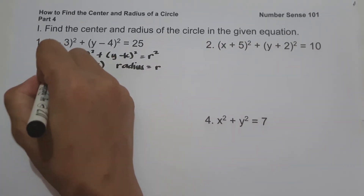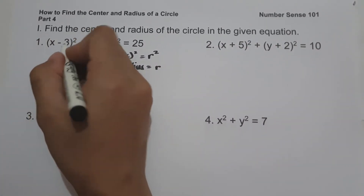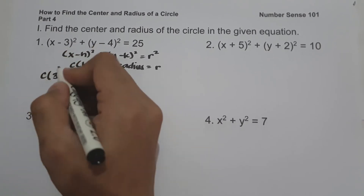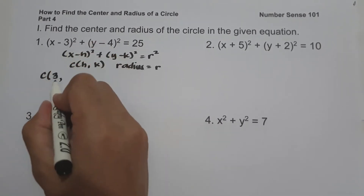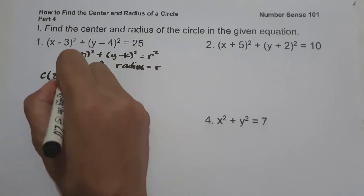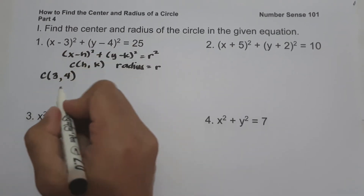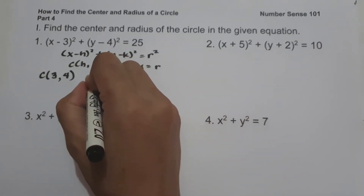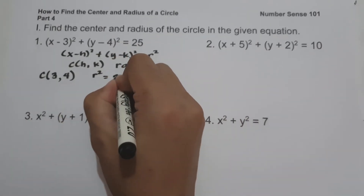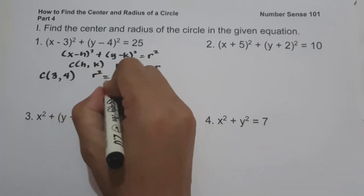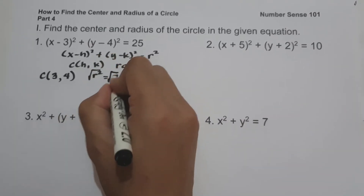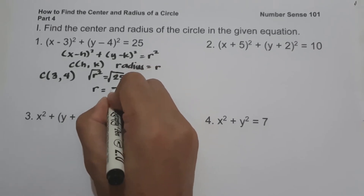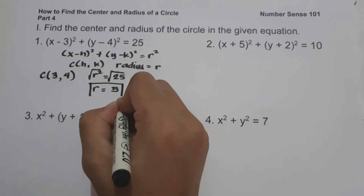To find the center, we have negative 3, so we write it as positive 3 — we take the opposite sign — and the y-value is 4. So our center is (3, 4). To find the radius, r squared equals 25. Taking the square root of both sides, the value of the radius is square root of 25, which is 5. And this will be our answer.